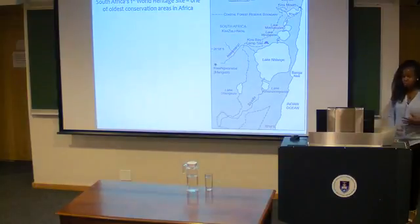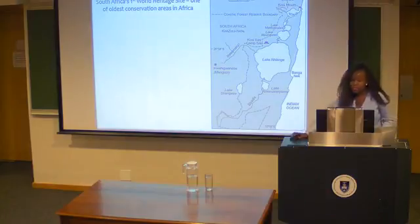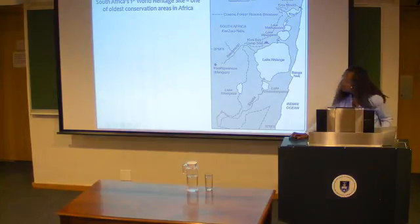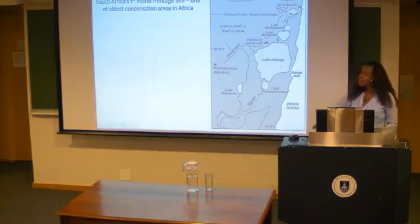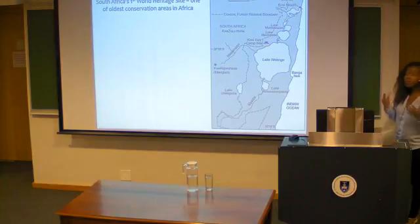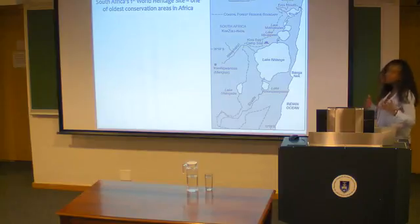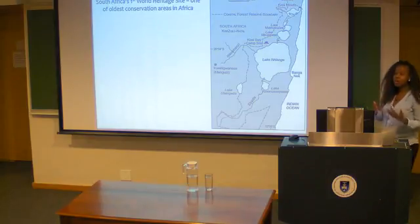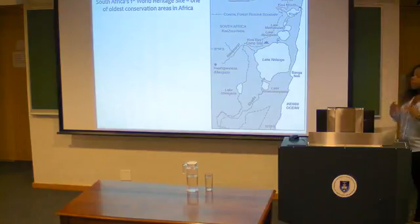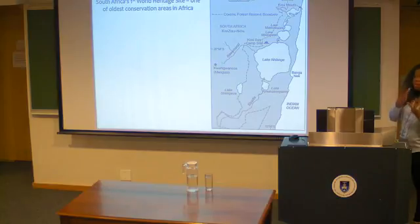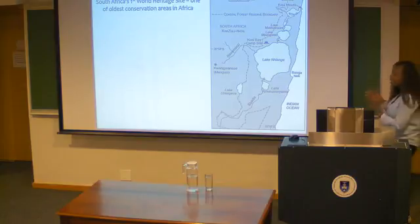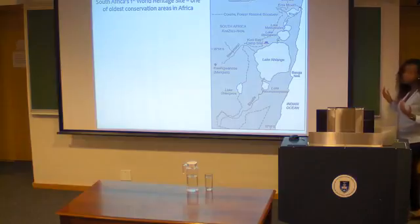My research has been largely focused in Kosi Bay. Kosi Bay is located on the northernmost coast of KwaZulu-Natal, right on the border between South Africa and Mozambique on the east coast. Kosi Bay forms part of South Africa's very first World Heritage Site known as Isimangaliso World Heritage Site — some may know it as St. Lucia, but the name changed in 2004. It's protected as a natural World Heritage Site, and has one of the most unique ecosystems you can find anywhere in the world.